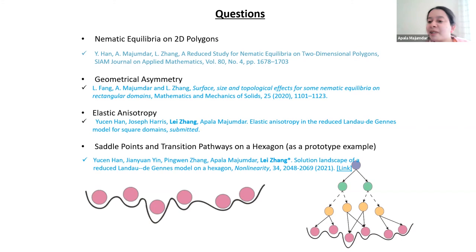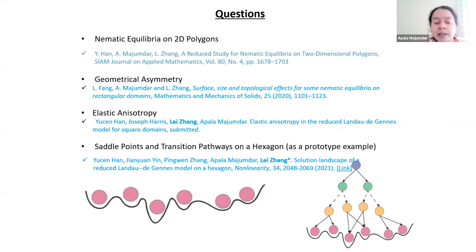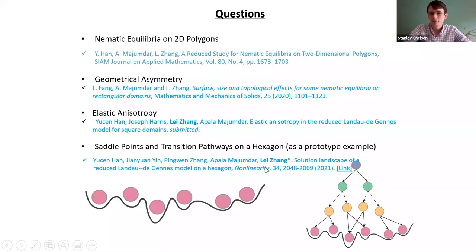I strongly suspect that some of that work will carry over even in the Landau-de Gennes framework in a 3D setting. For a cube, almost certainly yes, and I think we probably know what the classes are — it's a question of proving things. Once we get a grip on the cube, I imagine we'll be able to do things with other 3D geometries with certain special symmetries.